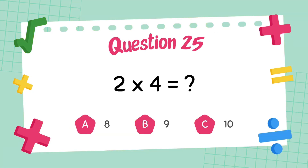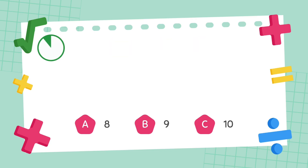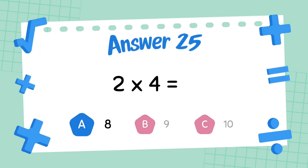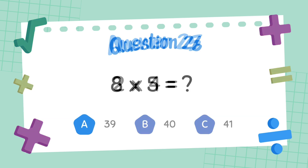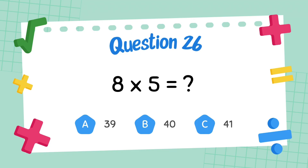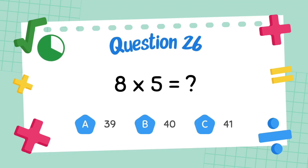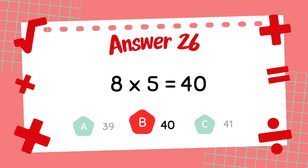What is two multiply four? The answer is eight. What is eight multiply five? The answer is forty.